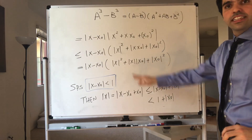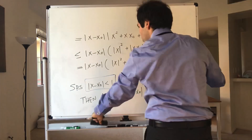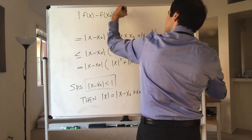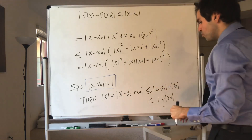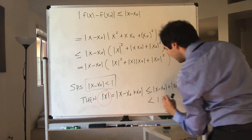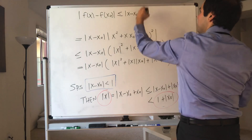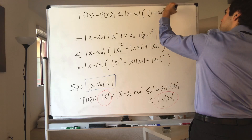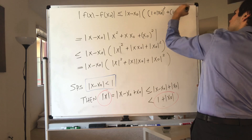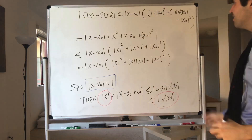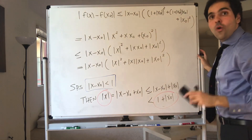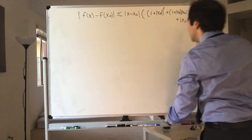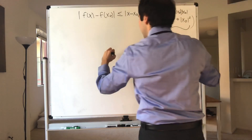That's very good, because we can now plug this into our expression. So f of x minus f of x naught becomes less than or equal to x minus x naught, and the same expression except you replace x with 1 plus x naught. So this becomes — quite a horrible expression — but 1 plus x naught squared, plus 1 plus x naught times x naught, plus x naught squared. Even though this looks horrible, this is very good, because it's just a constant — it does not depend on x. Let's write it as c.